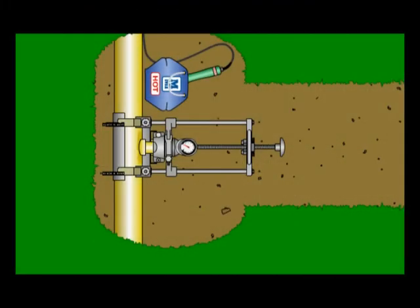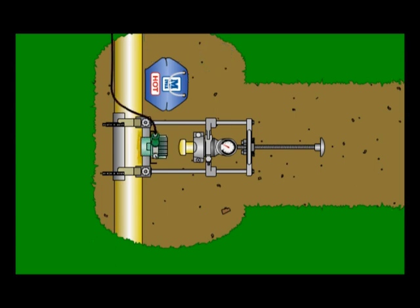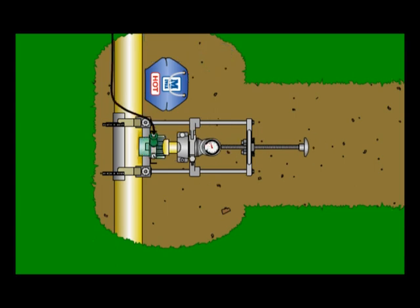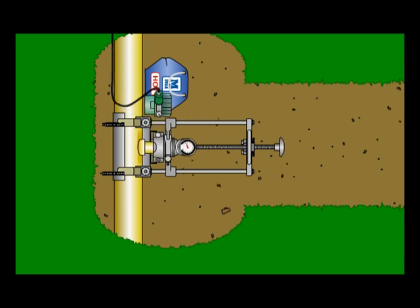Adding an additional main or service line off of a live main pipe is a trouble-free process using a number of different McElroy tools. Using saddle fusion procedures, install the branch saddle on the main pipe.